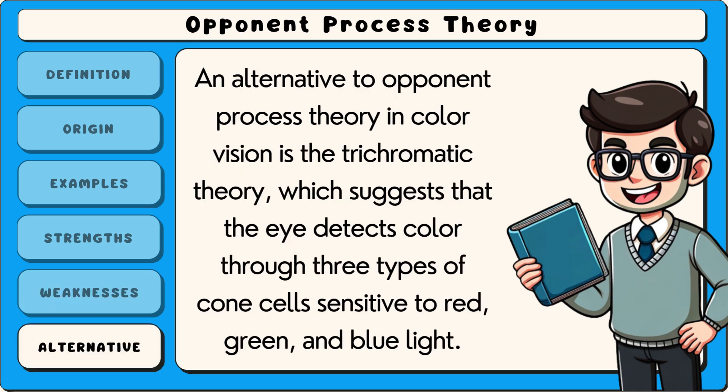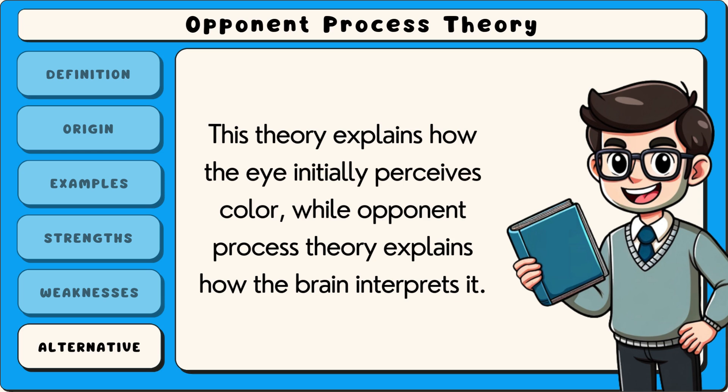An alternative to opponent process theory in colour vision is the trichromatic theory, which suggests that the eye detects colour through three types of cone cells sensitive to red, green and blue light. This theory explains how the eye initially perceives colour, while opponent process theory explains how the brain interprets it.